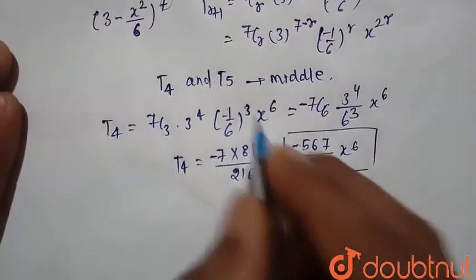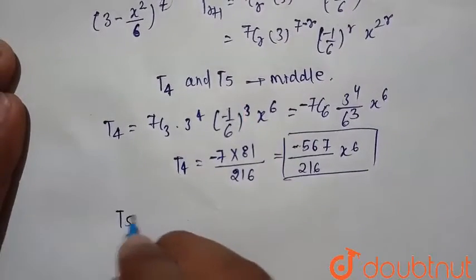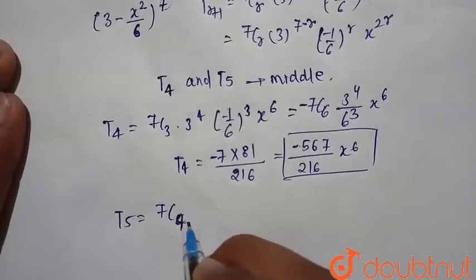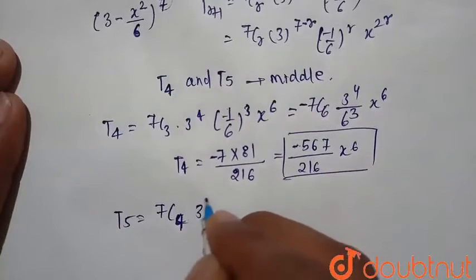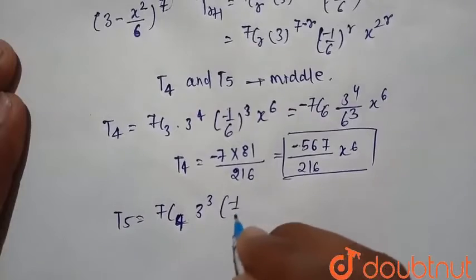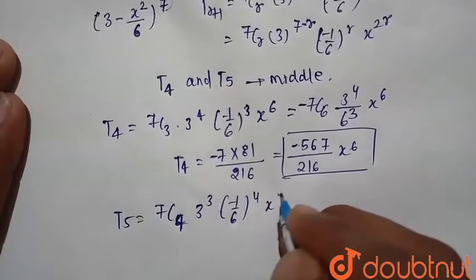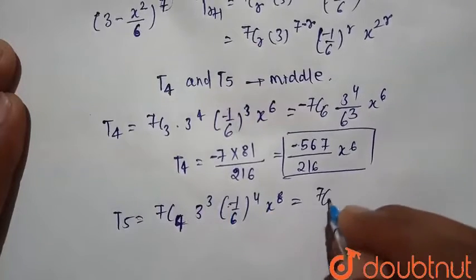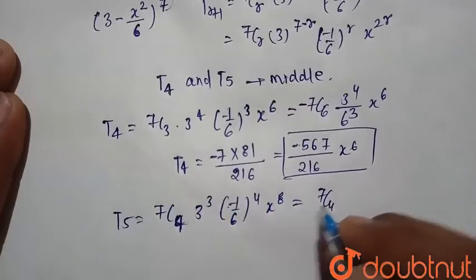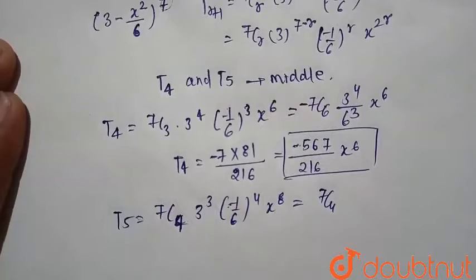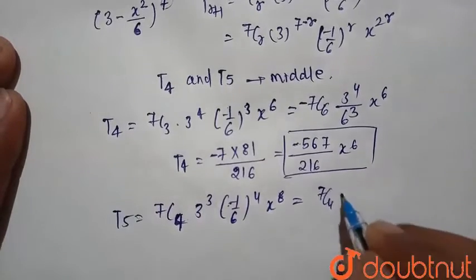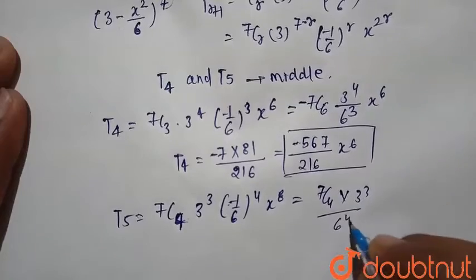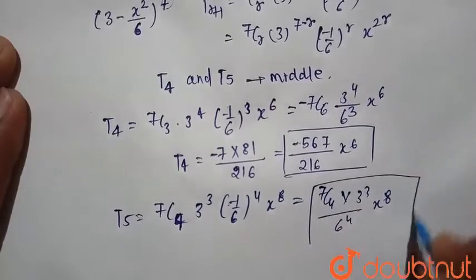Similarly, we find T5. For T5, r is equal to 4. So T5 equals 7C4 times 3 raised to power 3, times (minus 1 divided by 6) raised to power 4, times x raised to power 8. Since (minus 1) raised to power 4 is positive, T5 equals 7C4 times 27 divided by 6 raised to power 4, times x raised to power 8.